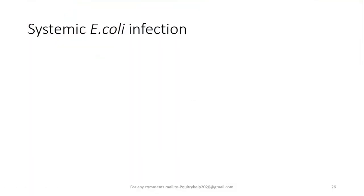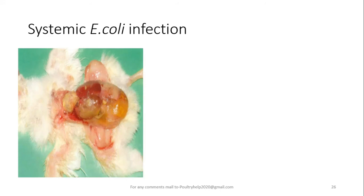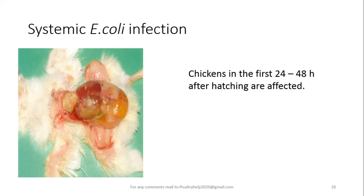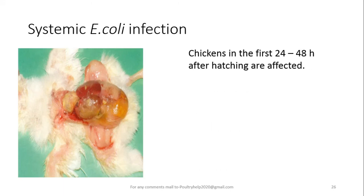Another form is systemic E. coli infection. The postmortem changes discussed earlier represent local infection. Now we will discuss systemic E. coli infection, which can be found from neonatal to adult chicks and chickens.